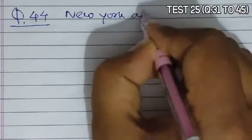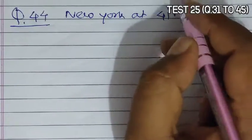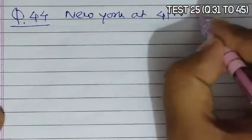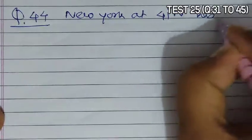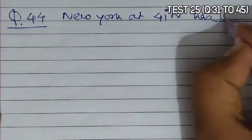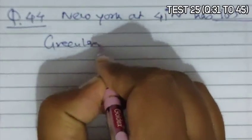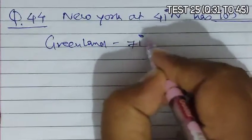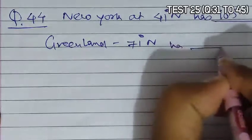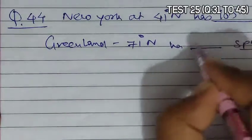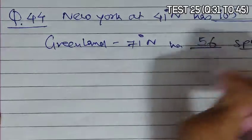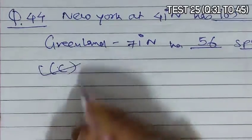Question 44: New York at 41 degrees North has 105 species of birds. Greenland, which is present at 71 degrees North, has fewer species — 56 bird species, which is less than 105. So according to this, option C becomes the correct answer.